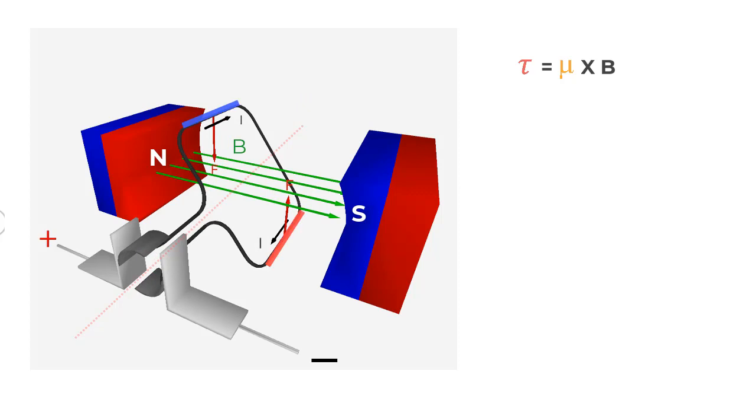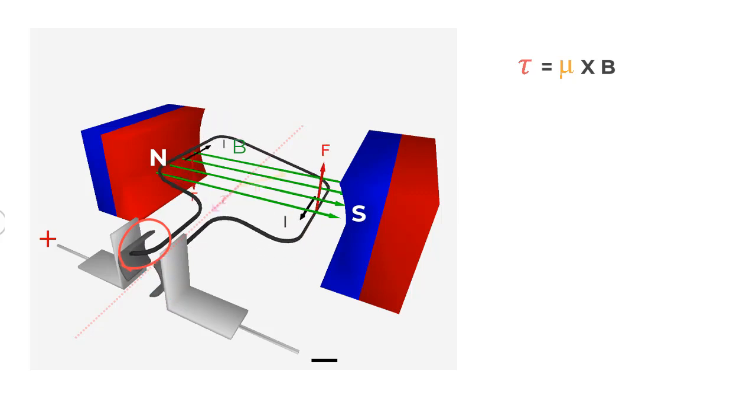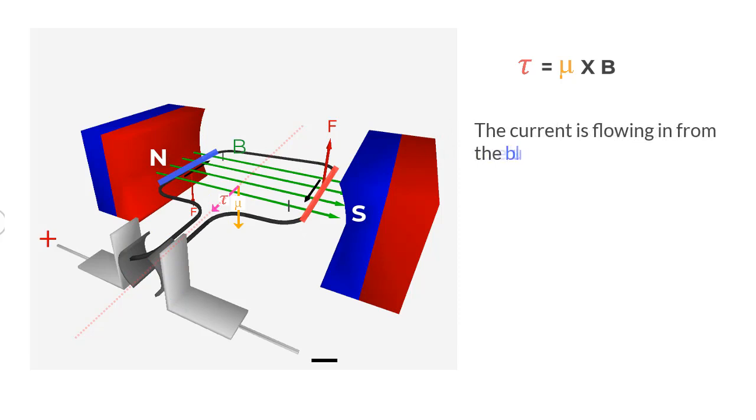But then, as the loop rotates further, the commutators are no longer in contact with each brush at the same time. Once again, the potential difference builds up between the commutators and the current starts flowing again in the loop. Now, what you will notice is that the current is flowing in from the blue side of the rotor and goes out of the red side. The direction of the current has reversed with respect to the rotor. But since the rotor itself has moved 180 degrees, the direction of the magnetic torque continues to be in the same direction as well.